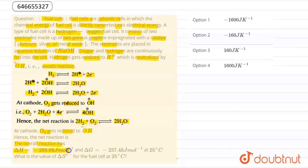The overall reaction has ΔH = -285.6 kJ/mol and ΔG = -237.4 kJ/mol at 27°C. What is the value of ΔS° for the fuel cell at 25°C? The question is solved using the equation ΔG° = ΔH° - TΔS°.